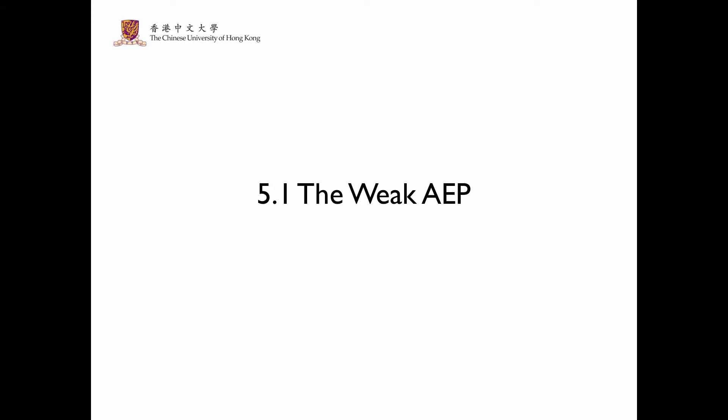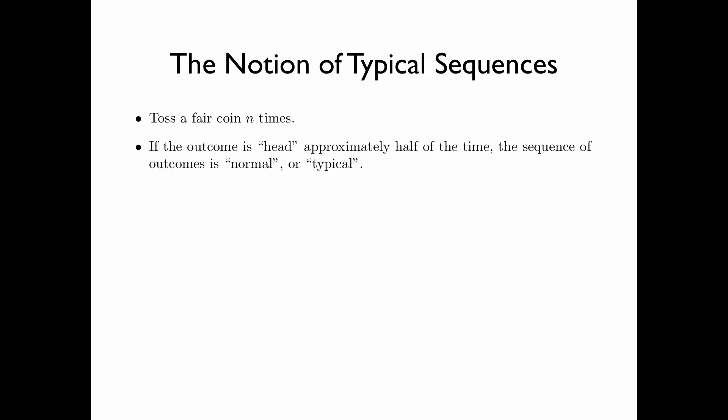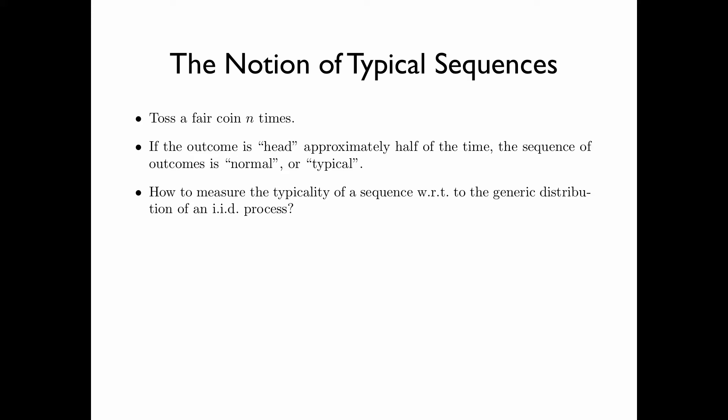Section 5.1: the weak asymptotic equipartition property, or simply the weak AEP. Let us now introduce the notion of typical sequences. Consider tossing a fair coin n times. If the outcome is heads for approximately half of the time, the sequence of the outcome is normal, or typical. The question is: how do we measure the typicality of a sequence with respect to the generic distribution of an IID process?